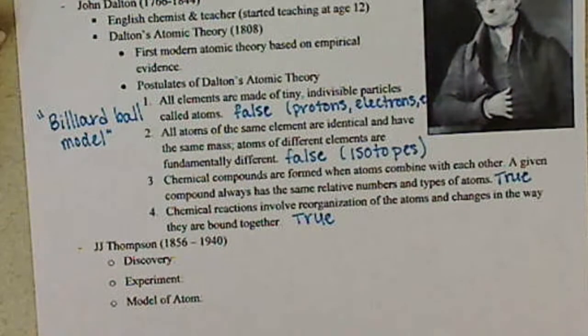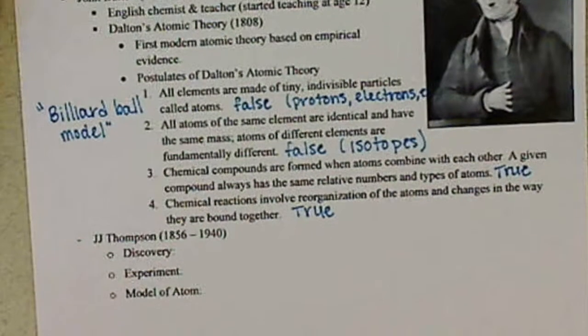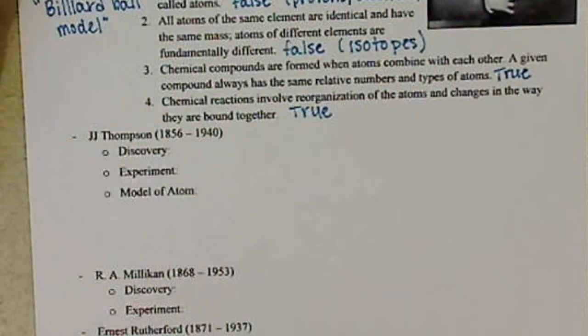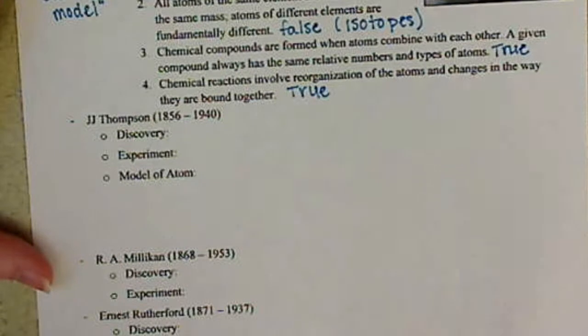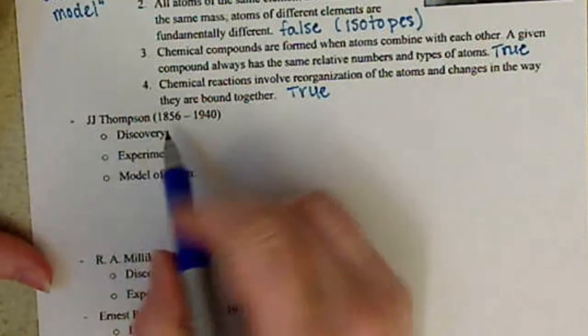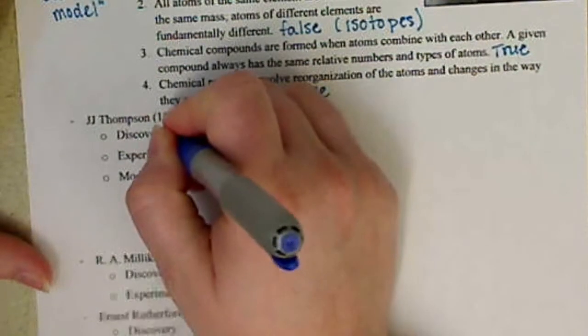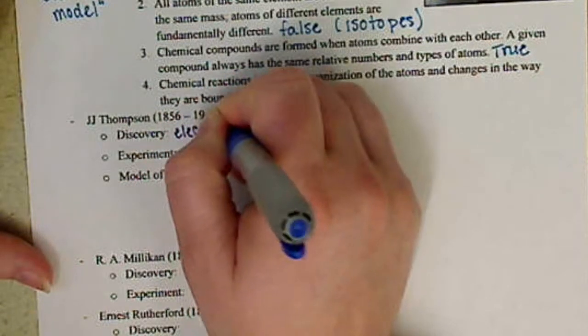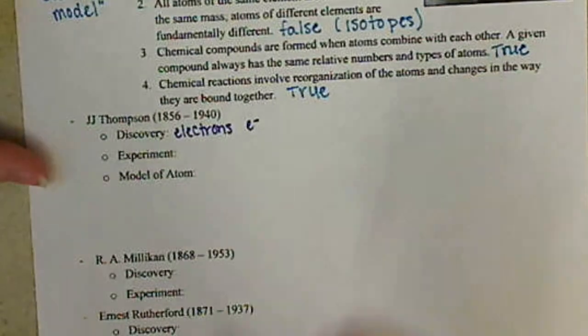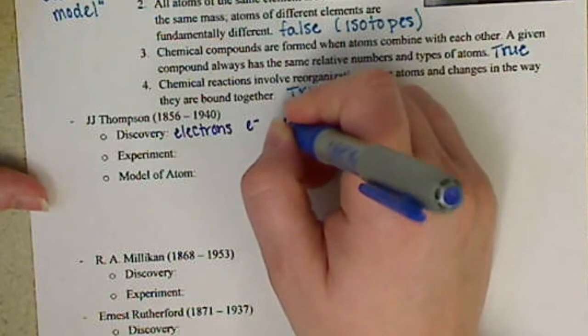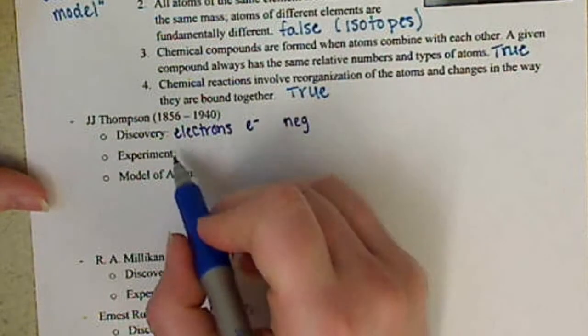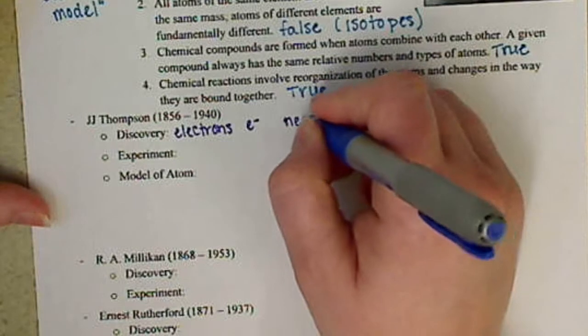And that was basically the development from the knowledge that protons and electrons and neutrons do exist. So that brings us to our next scientist after John Dalton. We have JJ Thompson. JJ Thompson, I'm basically going to give you kind of a brief overview of this history. He is known for the discovery of electrons, which we shorthand with a symbol of a lowercase e and then a superscript of a negative sign.